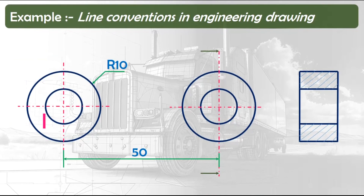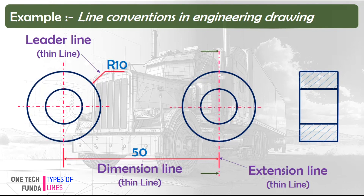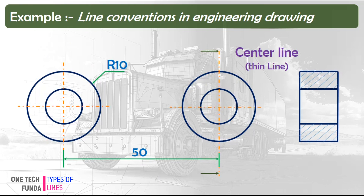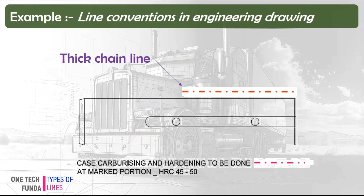Now we are going to see an example. These are the visible lines. These are the leader, dimension, and extension lines. These are the center lines. This is a phantom line. This is a thick chain line.